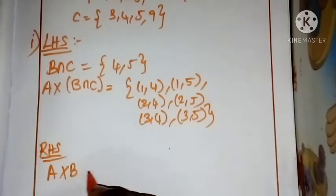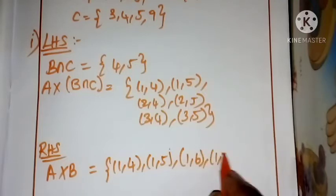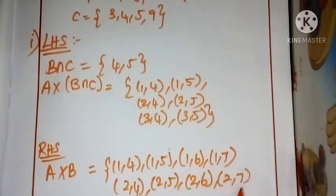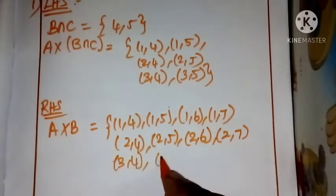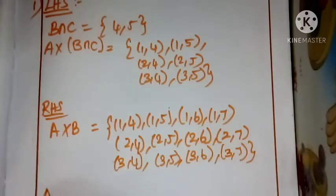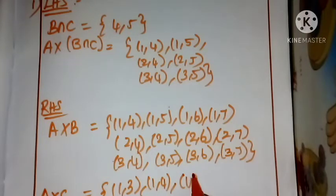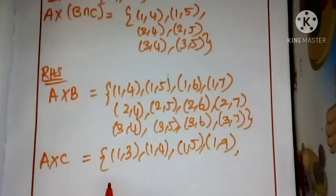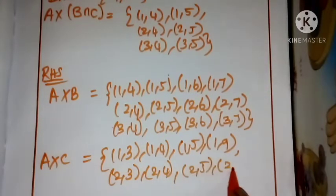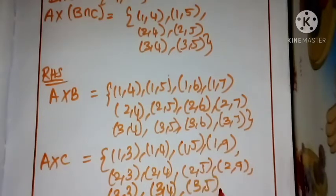A cross B is equal to (1,4), (1,5), (1,6), (1,7), (2,4), (2,5), (2,6), (2,3), (3,4), (3,5), (3,6), (3,3), (1,4), (1,5), (1,9), (2,3), (2,4), (2,5), (2,9), (3,3), (3,4), (3,5), (3,5), (3,9).